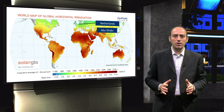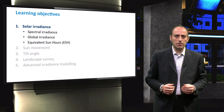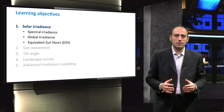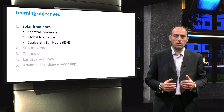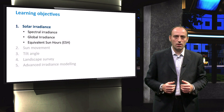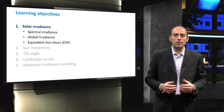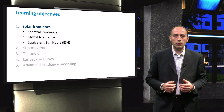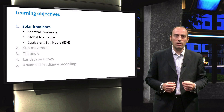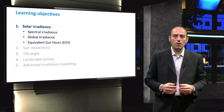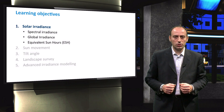In this video, we will start with the solar irradiance. We will discuss some basic properties of our Sun and the Sun's spectral irradiance incident on Earth. Then we will split the global irradiation into several components. Finally, we will introduce the concept of equivalent sun hours for a certain location on Earth.